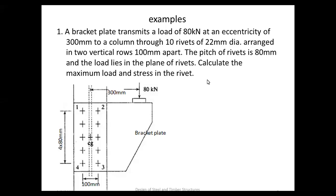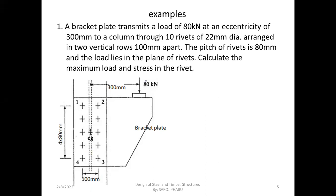This is the first example of the eccentric case. In this problem, we have a formula to use. We have a question where, if you want to apply the load in a bracket and create a line of action, we have a group of CG distances.